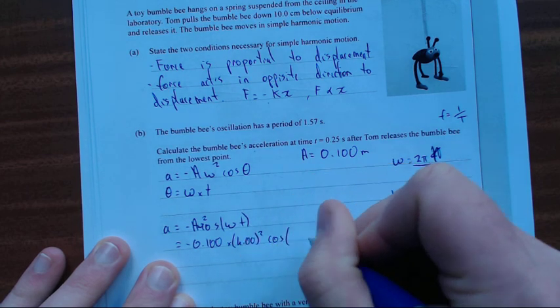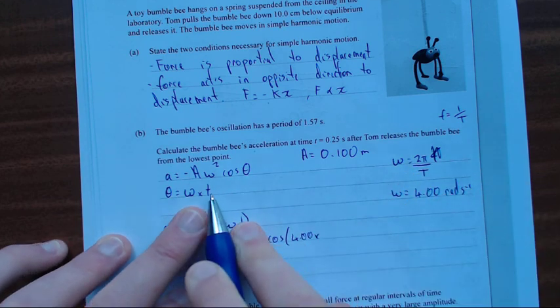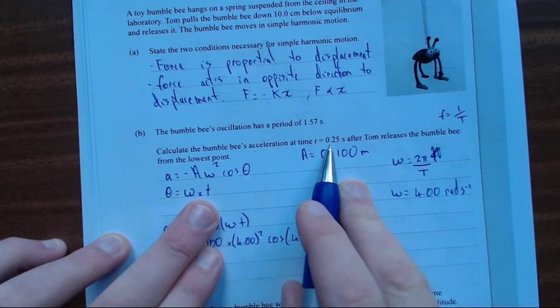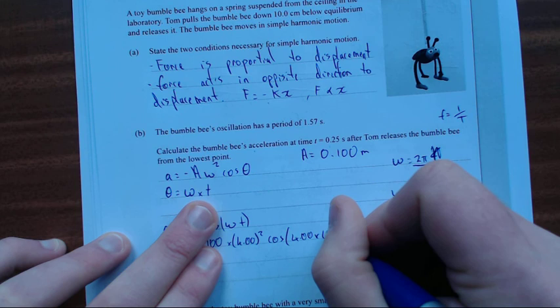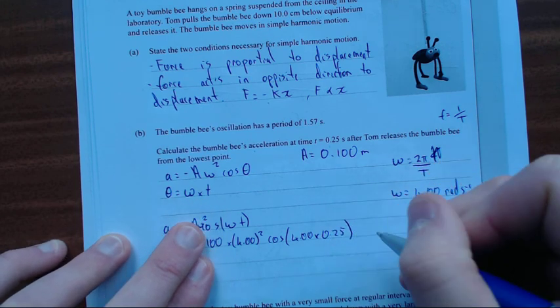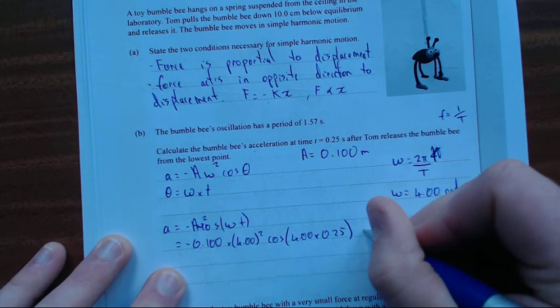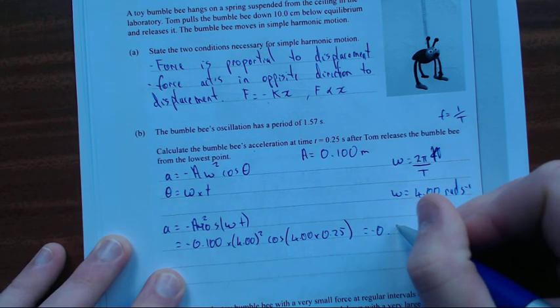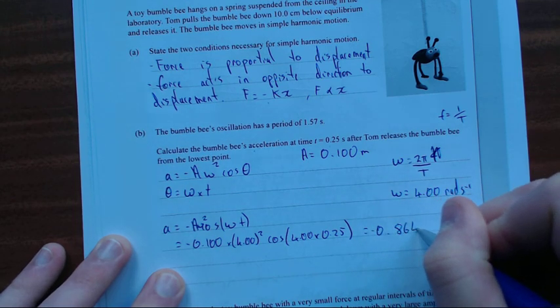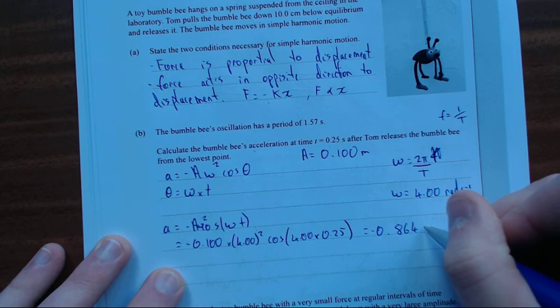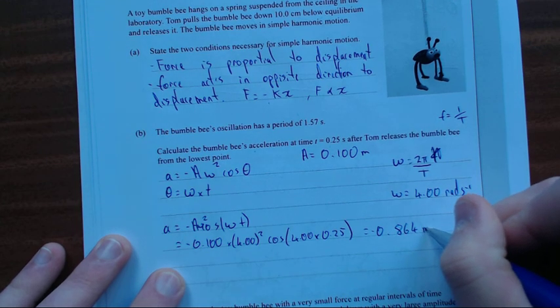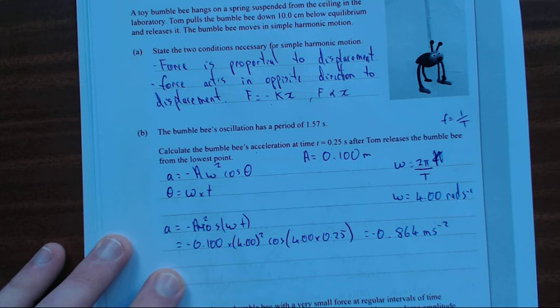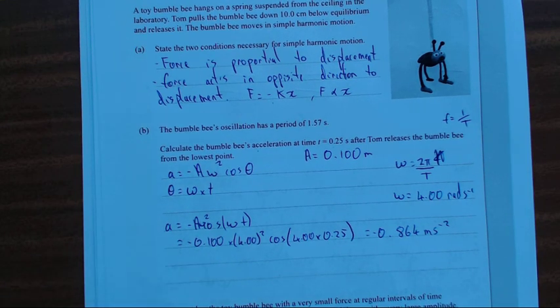Equals minus 0.100 times 4.00 squared times cos bracket 4.00 times 0.25. If you crunch that into your calculator, it'll give you minus 0.864 meters per second squared. And that seems reasonable enough.